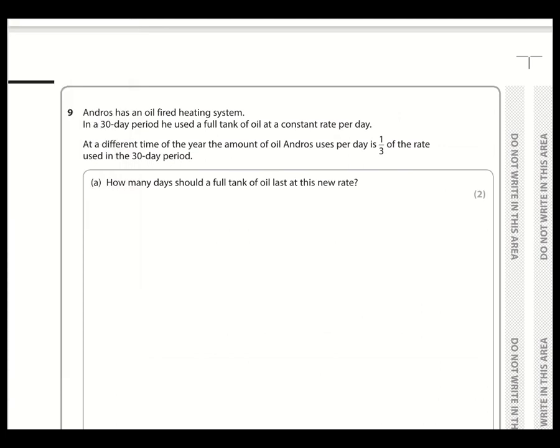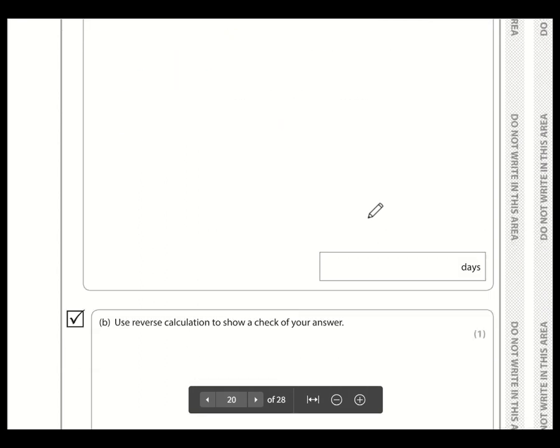Okay, so question number nine. Andross has an oil-fired heating system. In a 30-day period, he used a full tank at a constant rate per day. A different time of the year, the amount of oil Andross uses per day is one third of the rate. So how many days will it last? Well, if it's one third of the rate, then that means it will last three times longer. So therefore, it will be 30 multiplied by 3, which is 90. Just think about the context of the question. Just because it's one third, don't think it's got to be one third of 30, which would be 10. Other people are completely wrong. If he's using less oil, then it's going to last longer. So the answer is 90 days.